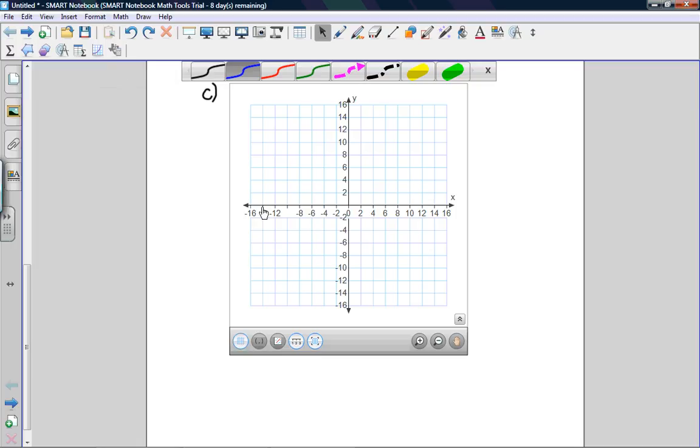13c asks us to find the equation of the axis of symmetry, find the vertex, and draw the graph. First, we already know that our x-intercepts are negative 2 and positive 6, so graph that first.